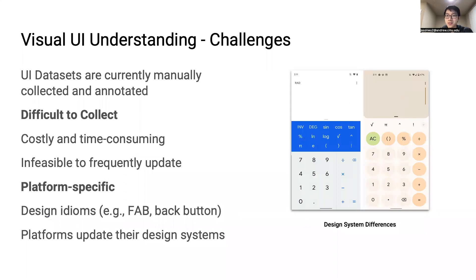Currently, visual UI understanding models are trained on datasets that are manually collected and annotated. These datasets are costly and time-consuming to collect. For example, Rico, a popular dataset of 70,000 Android screens, took five months and $20,000 to collect, making it prohibitively costly to collect and update. Yet, because design patterns vary across platforms and change over time, it's necessary to keep these datasets current so that models can generalize to real-world use cases.